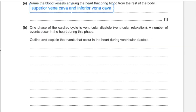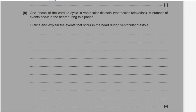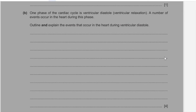One phase of the cardiac cycle is ventricular diastole, where ventricular relaxation occurs. A number of events occur in the heart during this phase. Outline the events that occur during ventricular diastole in order from start to end.